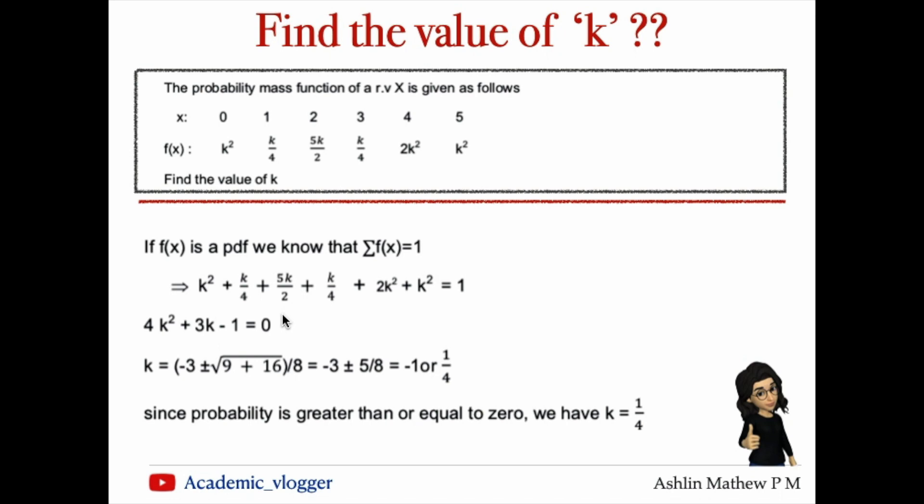Therefore, we must choose k = 1/4. Taking k = 1/4, we get the value of k as 1/4, which satisfies the condition that the summation of f(x) equals 1.